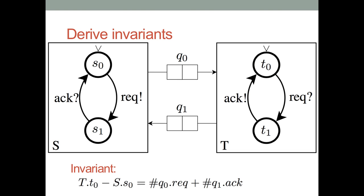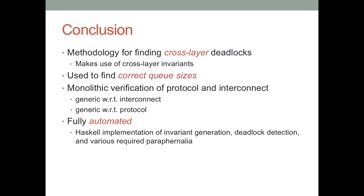For real examples, these kinds of cross-layer invariants very quickly become very complicated. What we have provided in our paper is a methodology for finding these cross-layer invariants and using these invariants to find cross-layer deadlocks. One of the applications that we have used it for is to find the correct queue sizes that allow deadlock freedom.